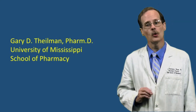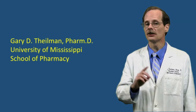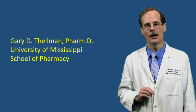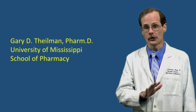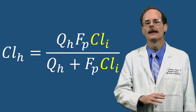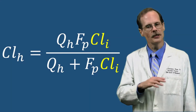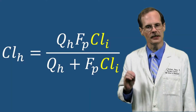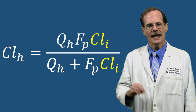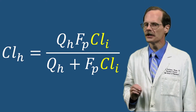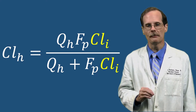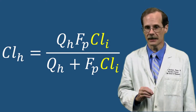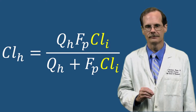Let's look into more factors that affect how quickly the liver can clear drug from the body using the well-stirred model. This time we're going to look at intrinsic clearance. In the well-stirred equation, intrinsic clearance is represented by Cl sub I.